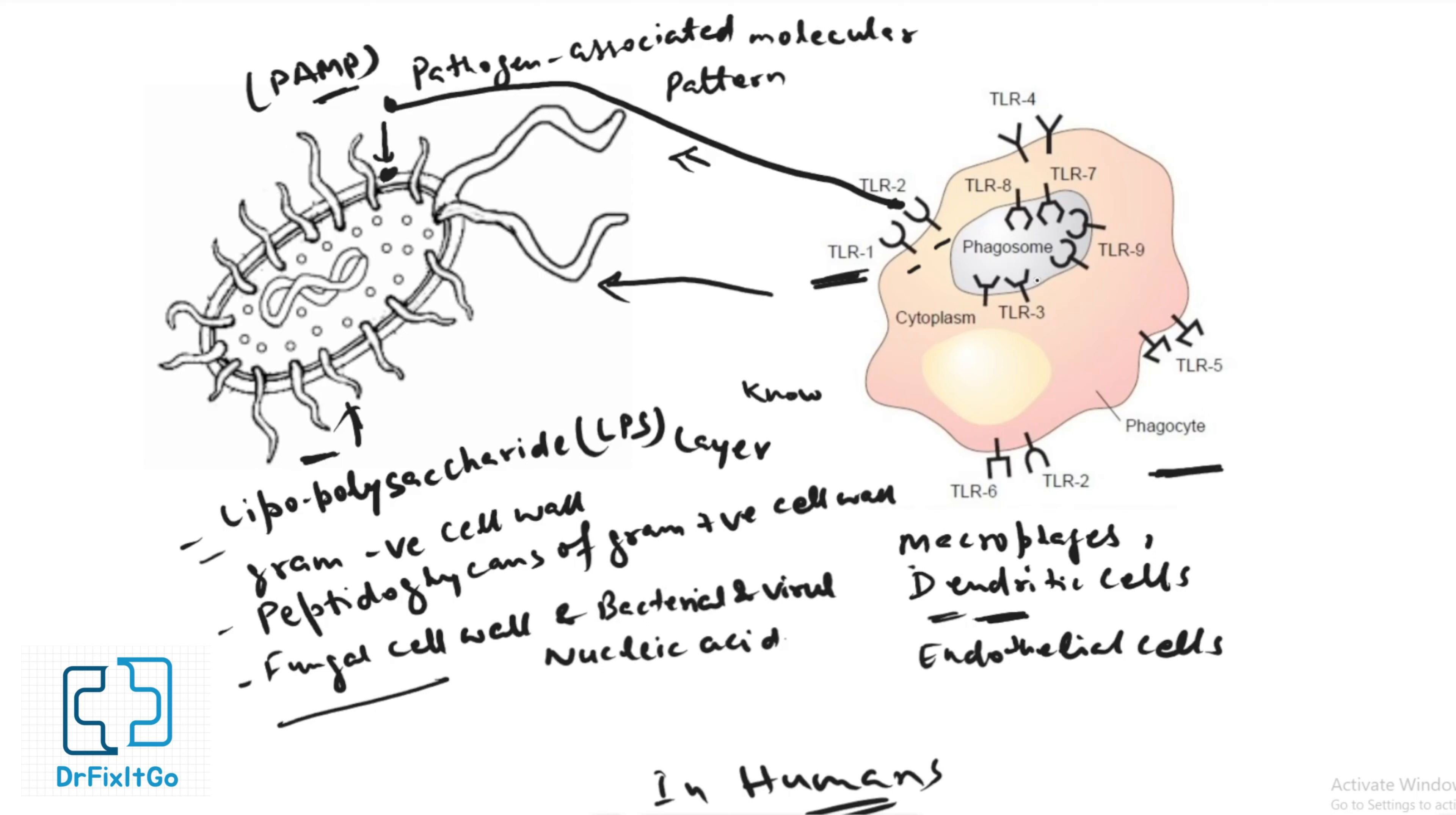In humans, TLRs bind to particular PAMPs. Chemical signals are sent to the cell nucleus, turning on the synthesis of cytokine genes. Following transcription and translation, the cytokines are secreted and sensed by immune cells and other non-immune cells essential to the innate immune response.